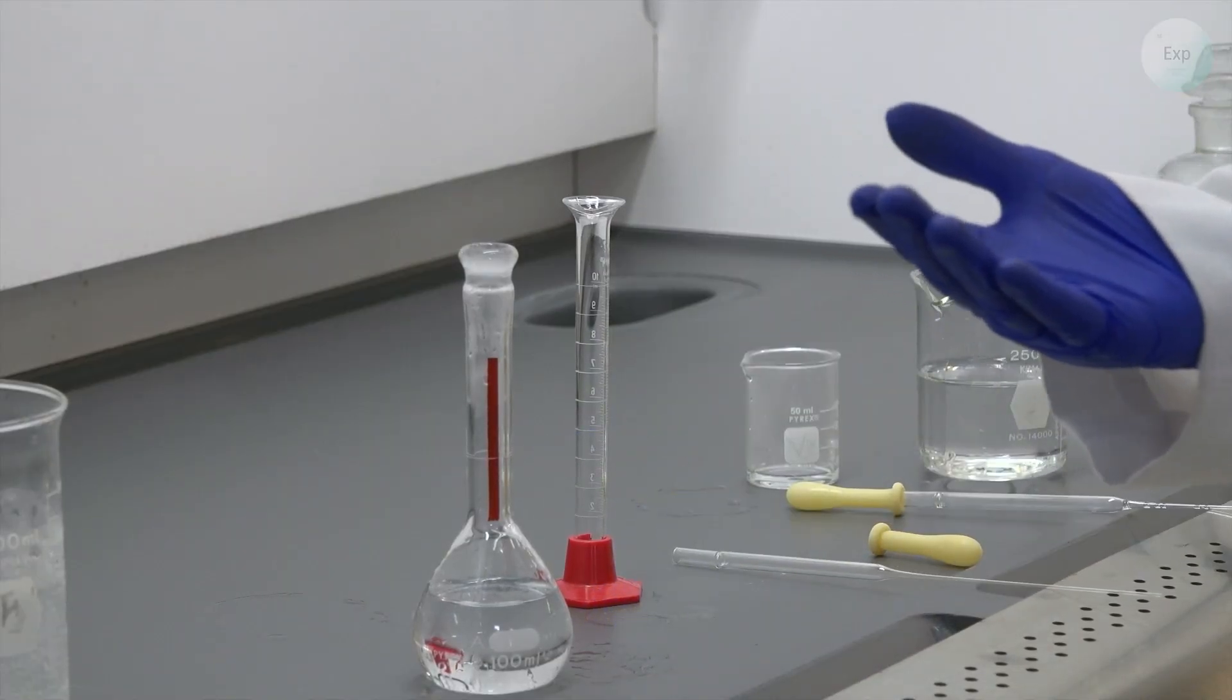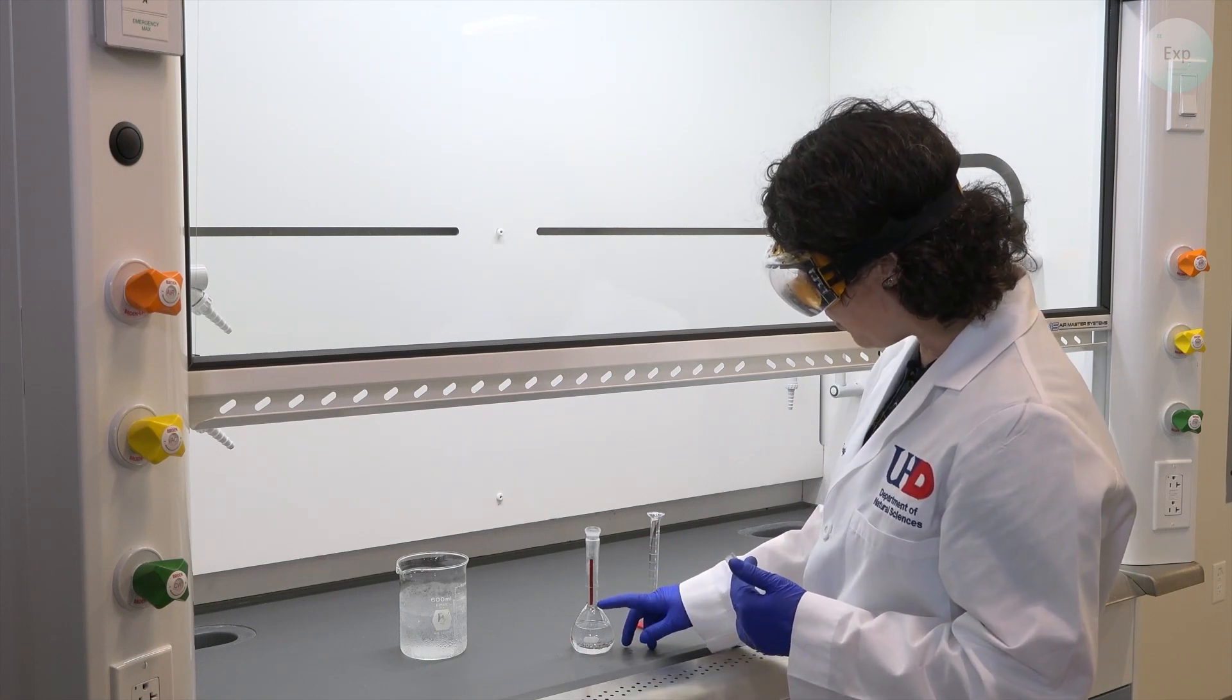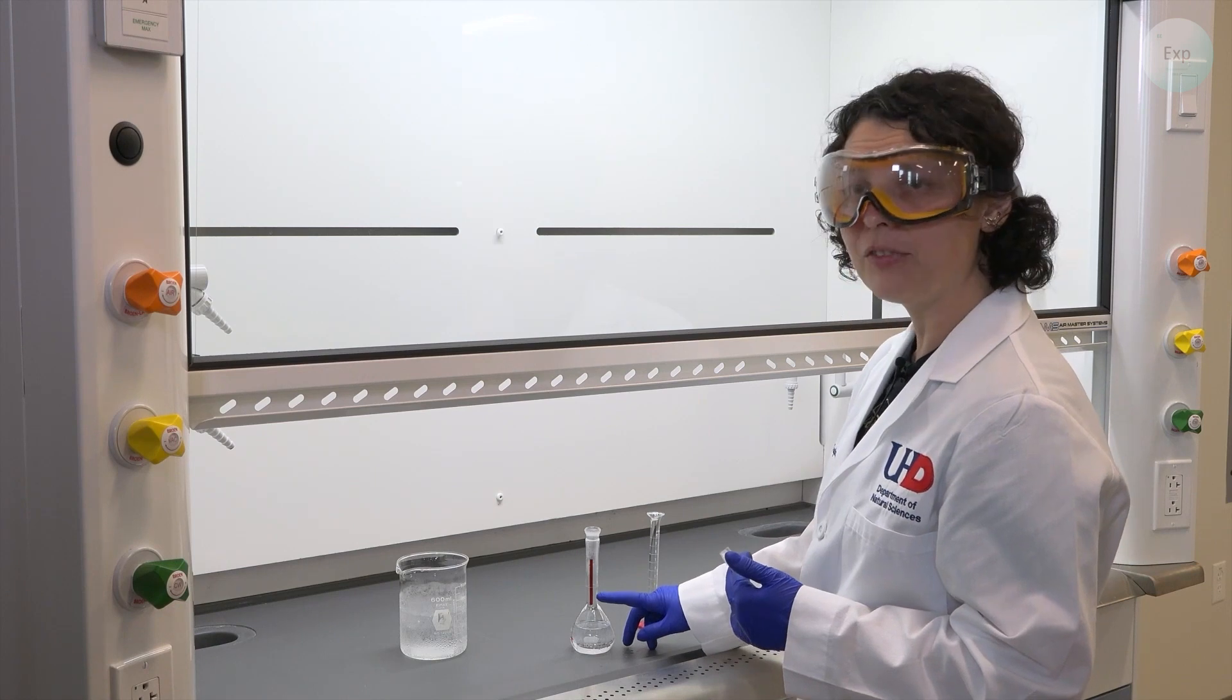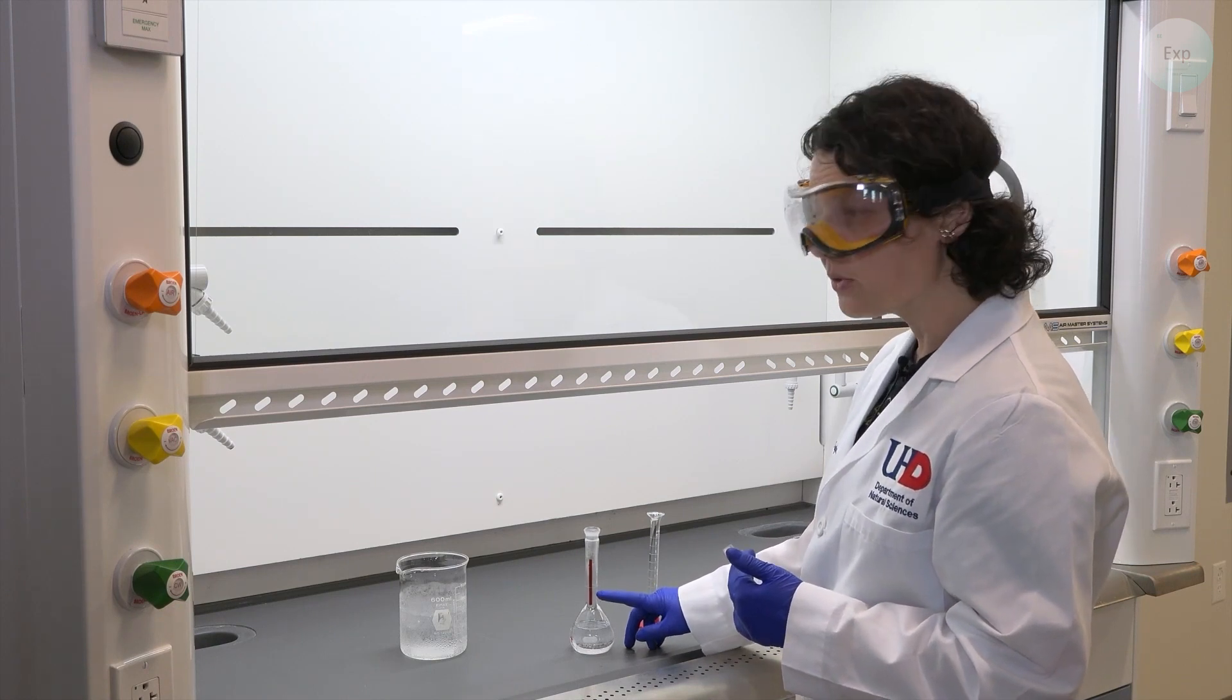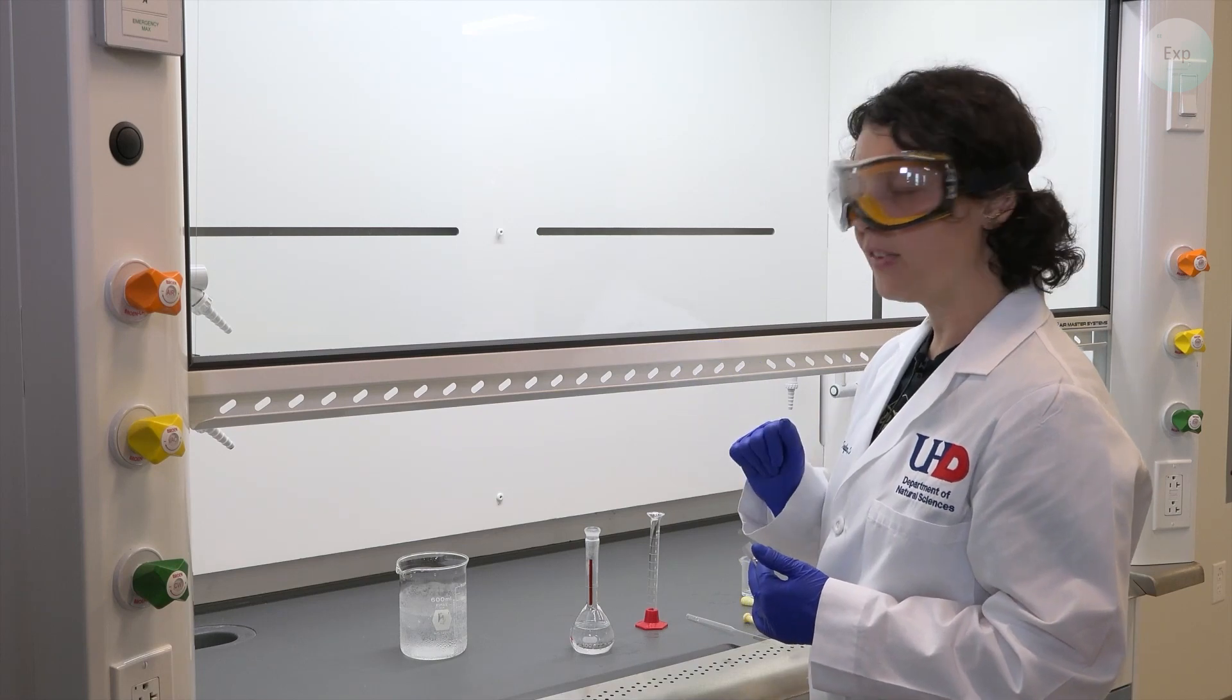So the next thing that we do is simply add water. Add a little bit of water, swirl it, and then when we get close to the neck, we can add a little bit more, but definitely slow it down. And when we get close to the marking, then we switch to a pipette to get the meniscus exactly at the marking.